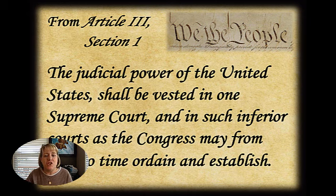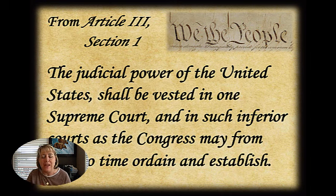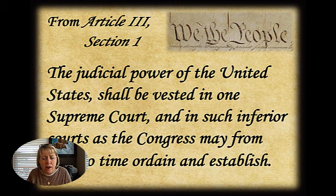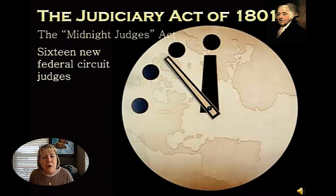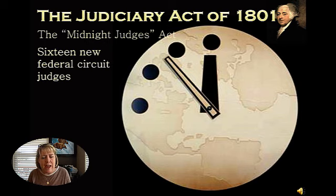Article 3, Section 1 talks about the judiciary, saying the judicial power of the United States shall be vested in one Supreme Court and in such inferior courts as the Congress may from time to time ordain and establish. That's what was going on in the Judiciary Act of 1789 — Congress was exercising its power afforded from the U.S. Constitution. That power still exists during the lame duck session, and so Congress is going to pass what has become known as the Midnight Judges Act, or the Judiciary Act of 1801.